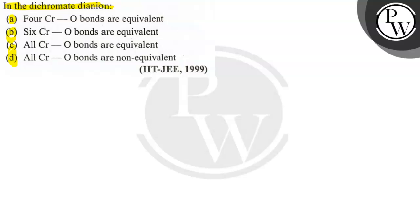We need to check if all Cr-O bonds are non-equivalent, or if four Cr-O bonds are equivalent, six Cr-O bonds are equivalent, all Cr-O bonds are equivalent, or all Cr-O bonds are non-equivalent.